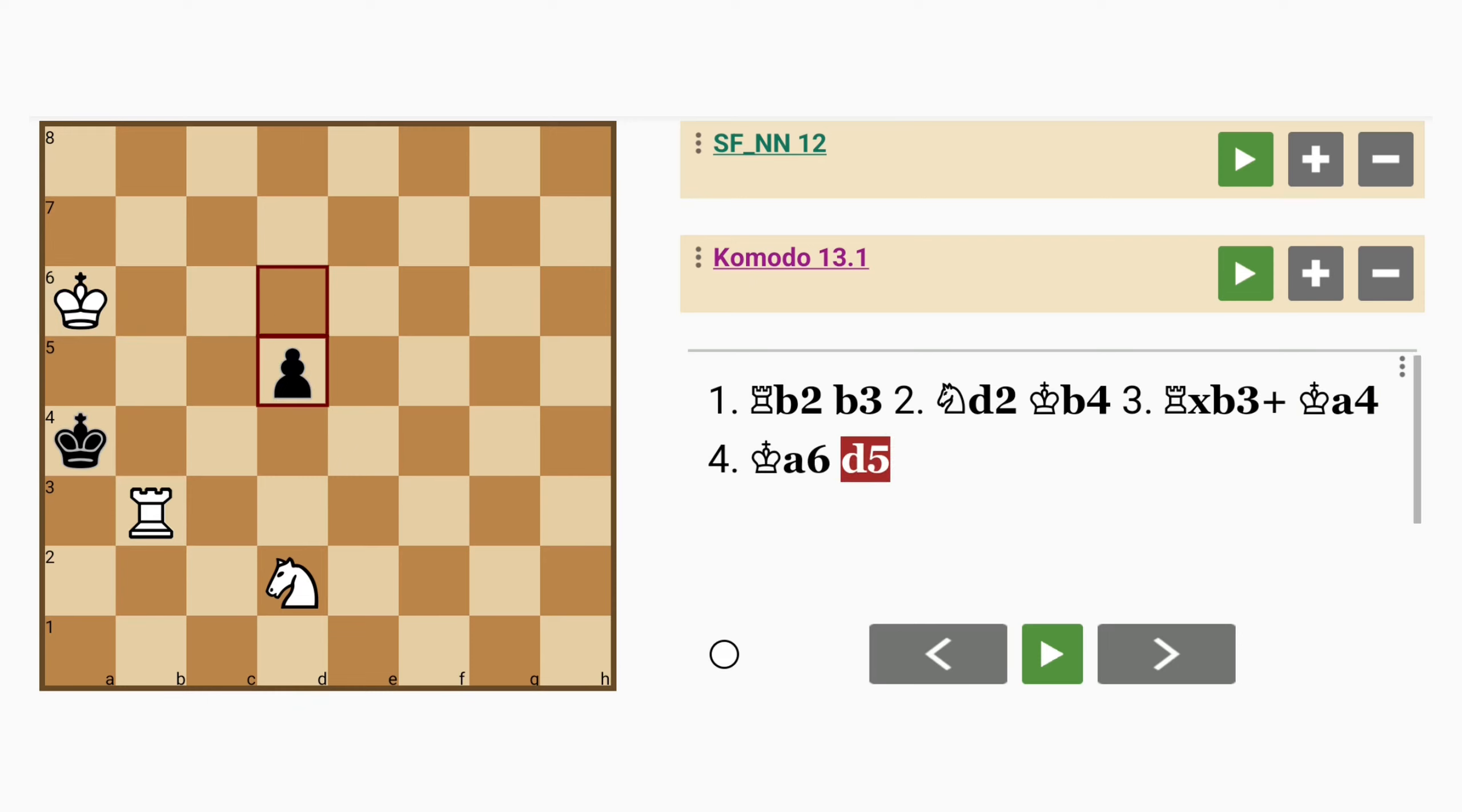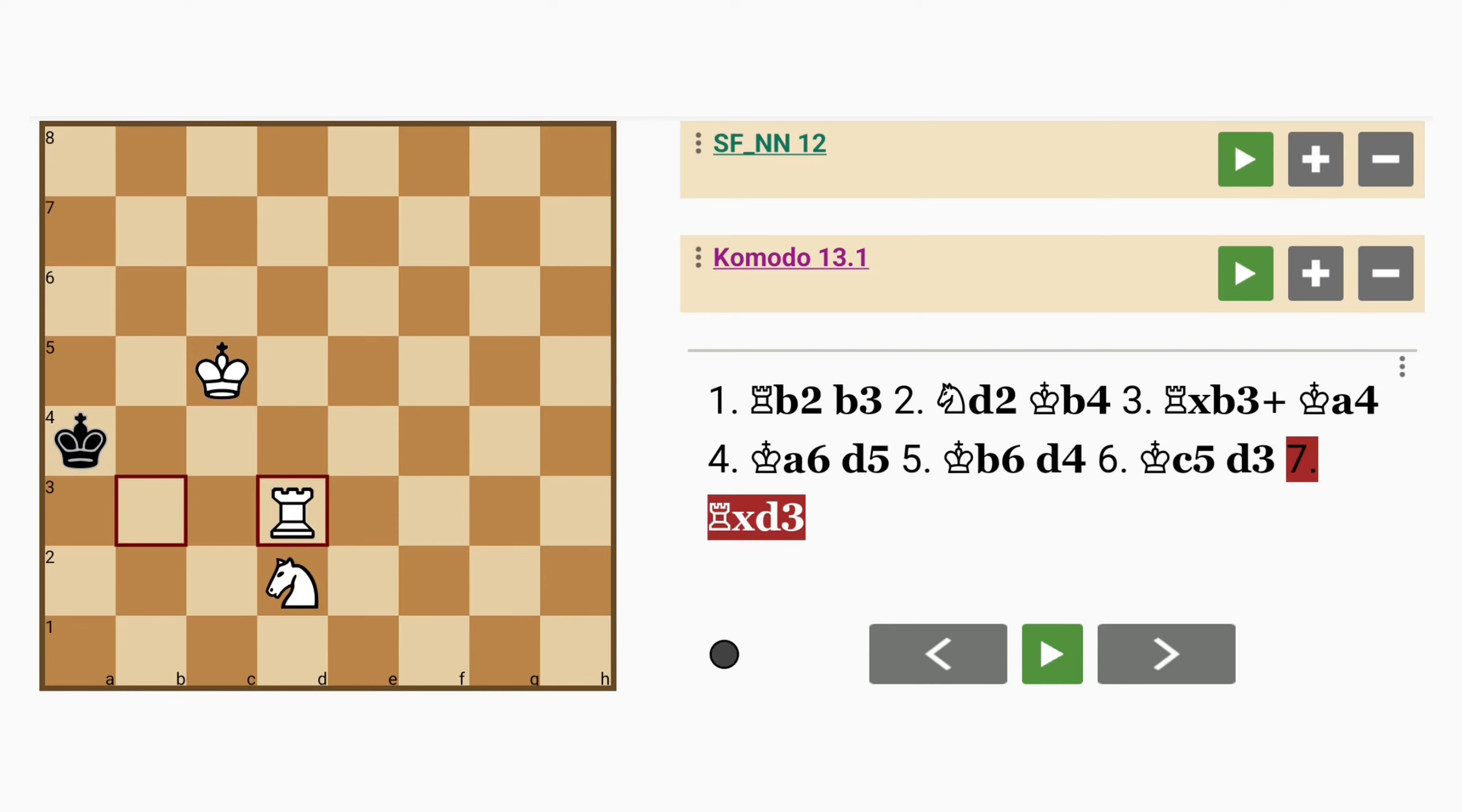King to a6, d5, king to b6, d4, king to c5, d3, rook captures pawn, king to a5, and rook to a3 mates.